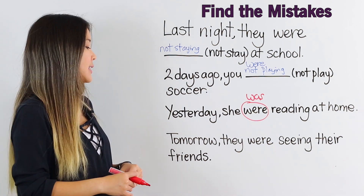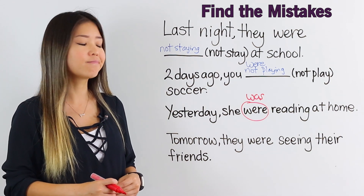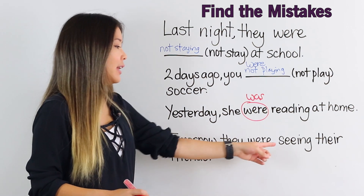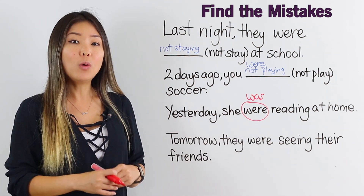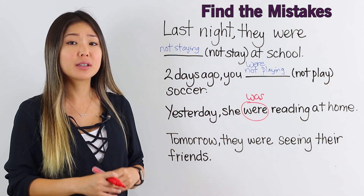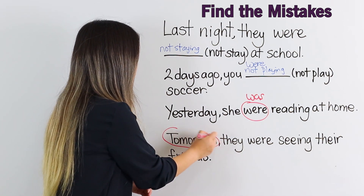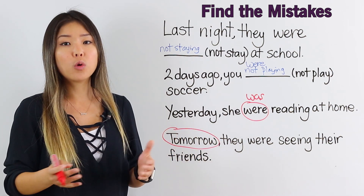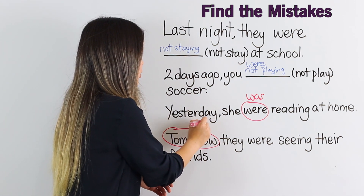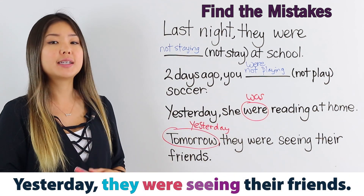In the next sentence it says: Tomorrow, they were seeing their friends. They and were — that's correct, and we have the verb –ing. So what's the mistake? Remember, the past continuous is for the past. Tomorrow is not the past. So instead, we need to put a word that shows the past. For example, yesterday. Yesterday, they were seeing their friends.